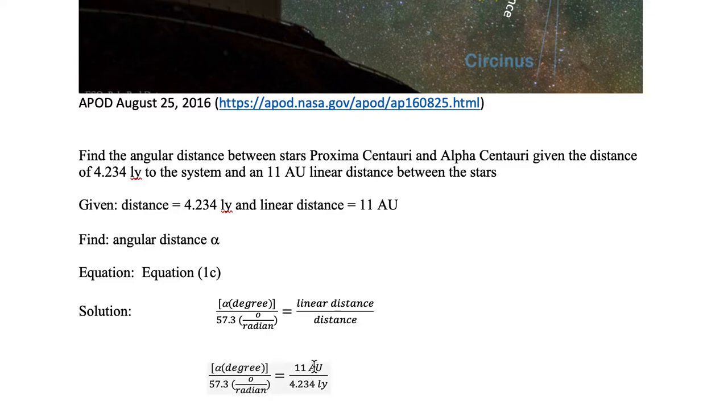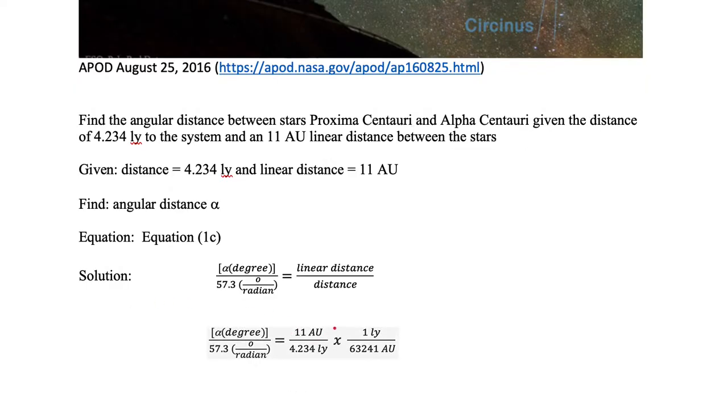Notice that we cannot directly calculate the right-hand side because AU does not cancel with light year (LY). The letters must cancel in addition to the numbers. Since we can't cancel, we must convert. We could have converted everything into AU or everything into light year, so long as the top and bottom remain the same. I decided to use the conversion of 1 light year equals 63241 AU.